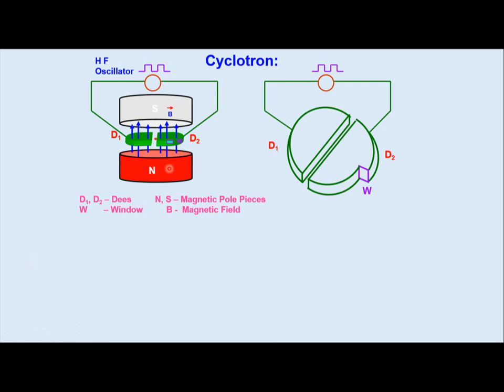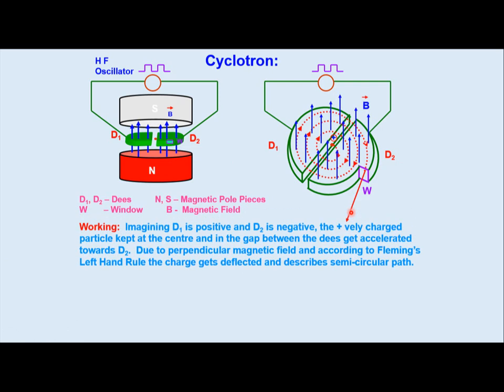This is the window available, which is also shown in this diagram. Imagining D1 is positive and D2 is negative, the positively charged particle kept at the center and in the gap between the D's gets accelerated towards D2. Due to perpendicular magnetic field and according to Fleming's left hand rule, the charge gets deflected and describes a semicircular path. Basically cyclotron is a device used to accelerate only positive particles. This is not for electrons, not for neutrons. This is applicable for positive charges, basically proton-like charges.